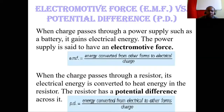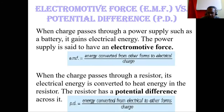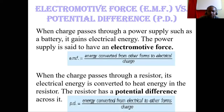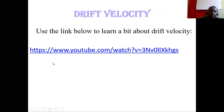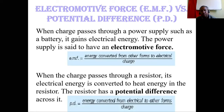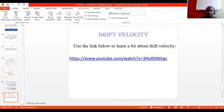Next, we look at electromotive force versus potential difference. EMF is what we get from our power supply — the voltage supplied by your battery or AC supply. Potential difference is the difference in charges around the circuit. So potential difference happens inside the circuit, while EMF is supplied by the battery.